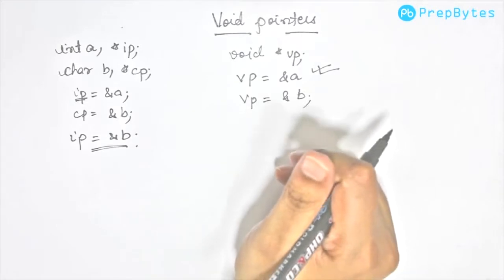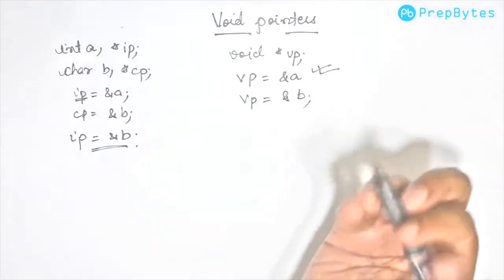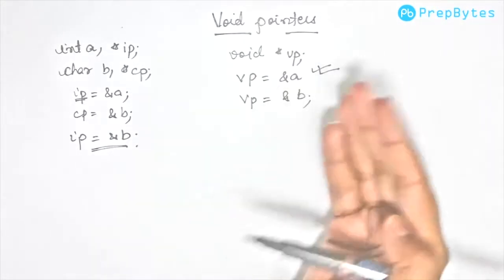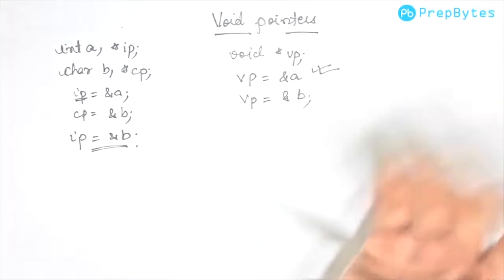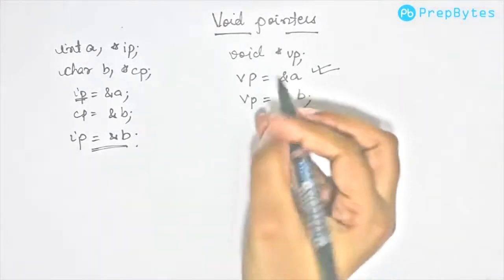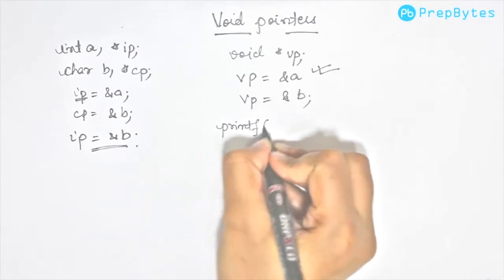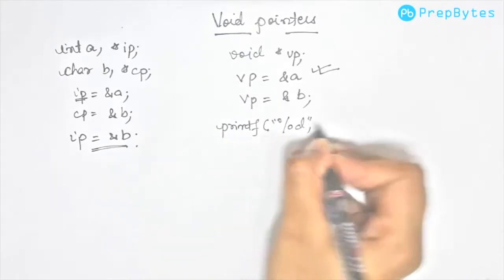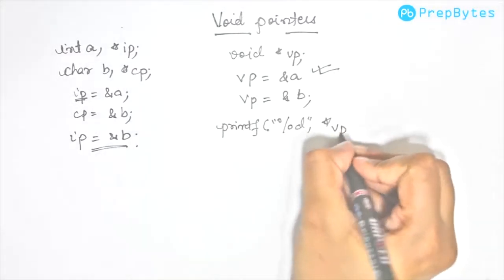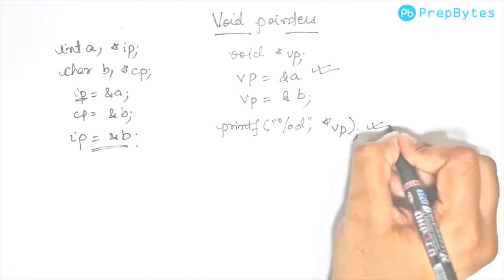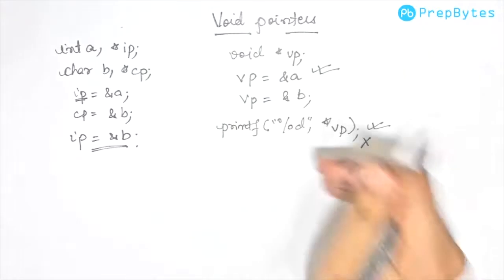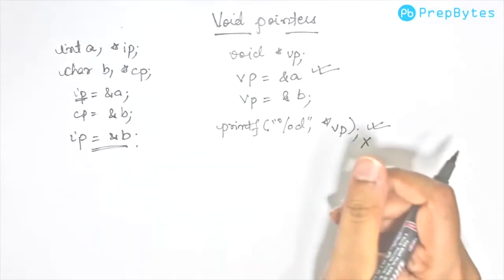One thing to note about void pointers: if we try to dereference what is stored in the void pointer—can we simply do this? No, we can't. This will give an error. Why can't we do this?